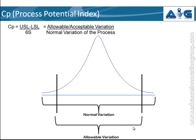So we can call CP the ratio of allowable variation to normal variation. This tells us how well the normal variation of your process fits within the allowable variation. Normal variation means all the process output falling within that range; allowable variation means all output should function within the specification range. Any part of the process functioning outside that range is a defect.